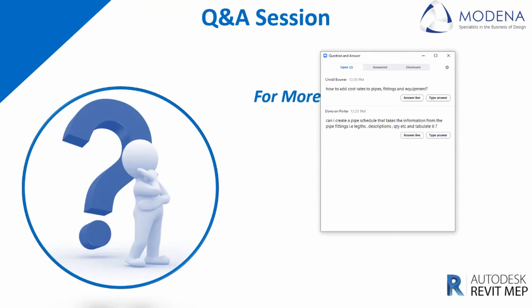We've got another question from Christelle: how do you add cost rates to pipes, fittings, and equipment? Equipment is actually the easiest element to add costings for — in your edit type box you'll find a costing parameter and you add the value to the equipment or fixture itself. However, when it comes to fittings and pipes, you'll have to add that within the schedule under what we call a calculated parameter. You create a parameter with a formula-based element — for example, cost for pipe — where you write the length divided by one metre for a per-metre cost. The reason we divide by 1000 is because Revit constantly reads in millimetres. So by dividing by that one-metre mark, we get a value which we can bind to a cost. In my formulas, it was length divided by 1000 multiplied by the price, giving a basic cost for the piping.